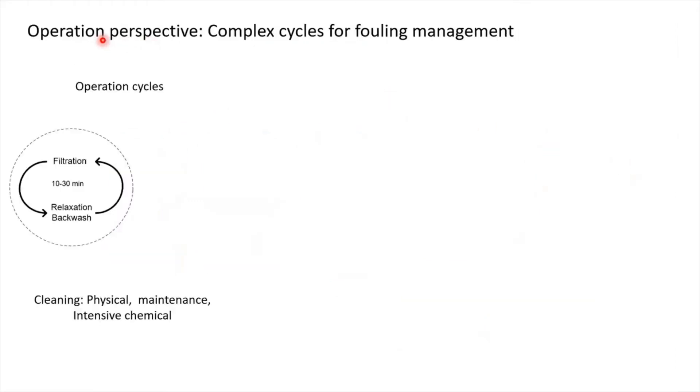In the operational perspective, fouling management results in a complex cycle of operation. As you can see from this illustration, you can develop a lot of cycles. First filtration with relaxation or backwashing. This is the cycle of short one within 10 to 30 minutes. Then we might implement some sort of maintenance chemical cleanings that can be done in one or two weeks with a low concentration of cleaning agents. And then from time to time, normally twice a year, depending on the performance of your system, you will probably need to do the intensive cleaning.